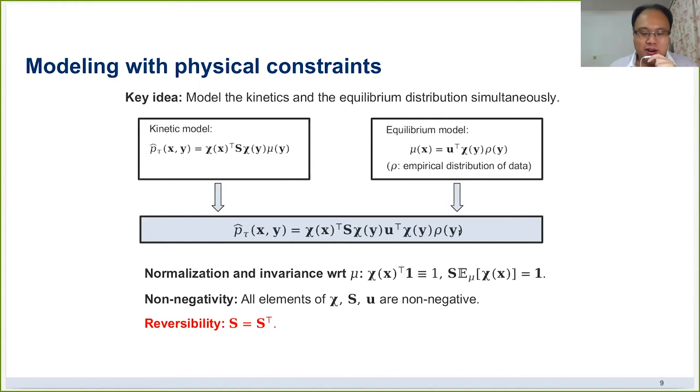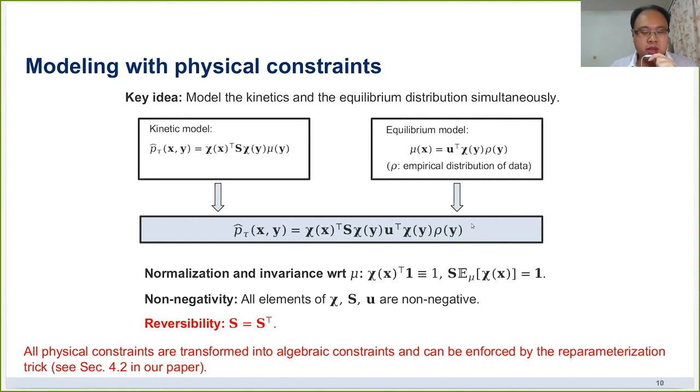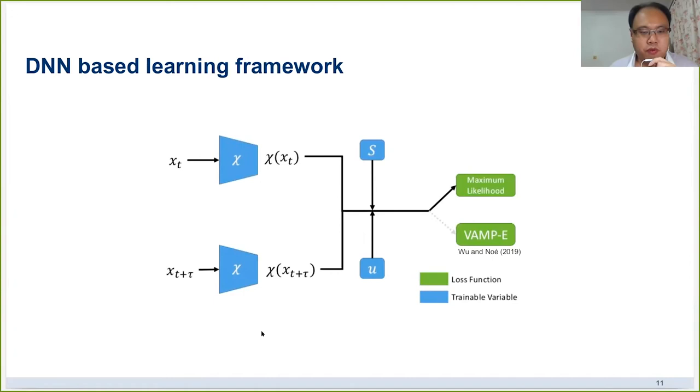Now there are two good news. The first good news is that here, if we use such a model, then all the physical constraints that we considered before can be transformed into the linear algebraic constraint. For example, for normalization, it can be satisfied by these two equations. And non-negativity is very easy. We can just ensure that all the elements of χ, S and u are non-negative. The most important thing is that for the time reversibility, it can be very easily satisfied if we just set S to be a symmetric matrix. The second good news is that all the constraints, all the algebraic constraints, they can be enforced by a reparametrization trick when we try to learn all the related parameters.